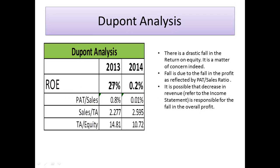Return on equity has fallen from 27% in 2013 to less than 1% in 2014. This fall can be attributed to the decline in the PAT-to-sales ratio. Additionally, the total assets-to-equity ratio has come down. While this may appear positive in principle, it raises the question of whether the reduction in assets is responsible for the reduction in revenue, which ultimately led to the reduction in profit — a relationship that needs in-depth analysis.